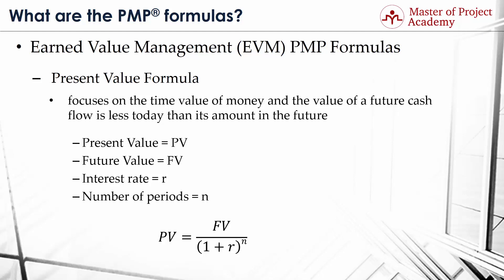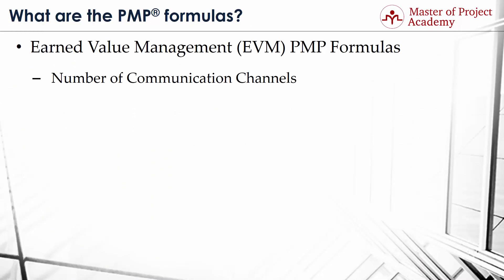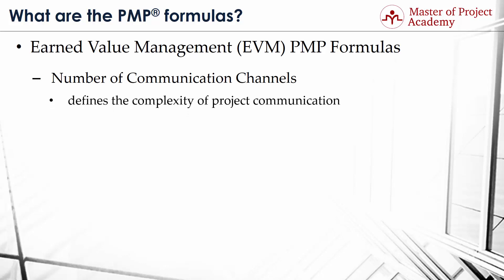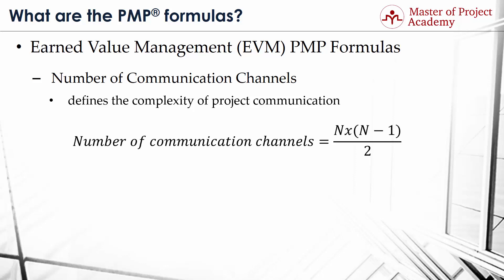PMP formula number 13: Number of Communication Channels Formula. We use this formula to decide on the complexity of project communication. If there are N stakeholders in an environment, the following formula gives the total number of communication channels: Number of Communication Channels equals N multiplied by the result of (N minus 1), all divided by 2.